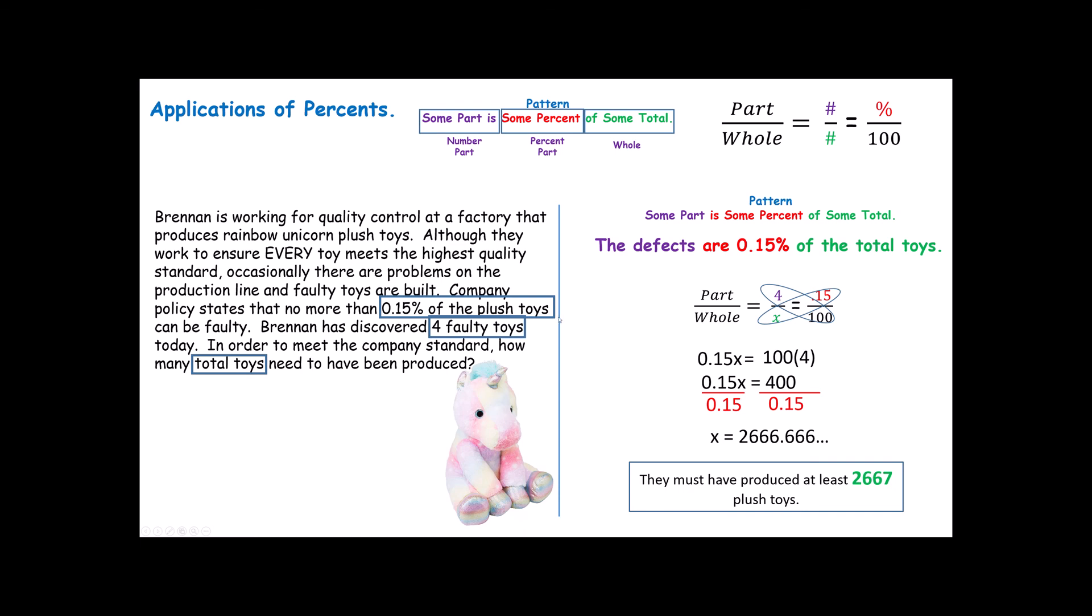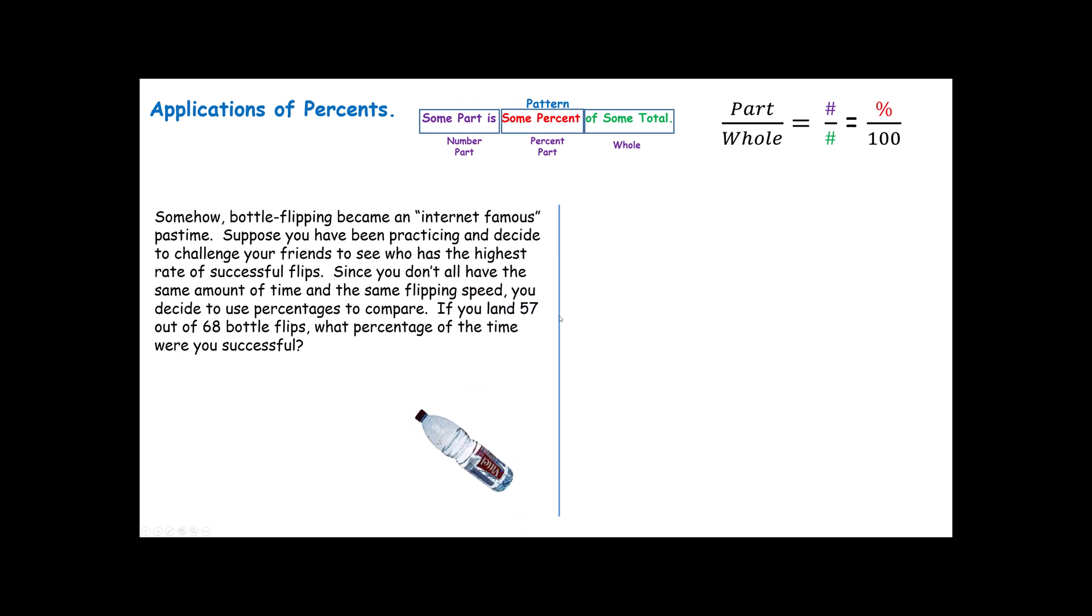You getting the hang of this? Here's another one. I'm going to read through it, and then I'm going to give you an opportunity to try this one on your own. Somehow, bottle flipping became an internet-famous pastime. Suppose you've been practicing and decide to challenge your friends to see who has the highest rate of successful flips. Since you don't all have the same amount of time and the same flipping speed, you decide to use percentages to compare. Suppose you land 57 of the 68 flips. What percentage of the time were you successful? I'm going to recommend you pause now. Try this on your own, and then take a look at what we've done.